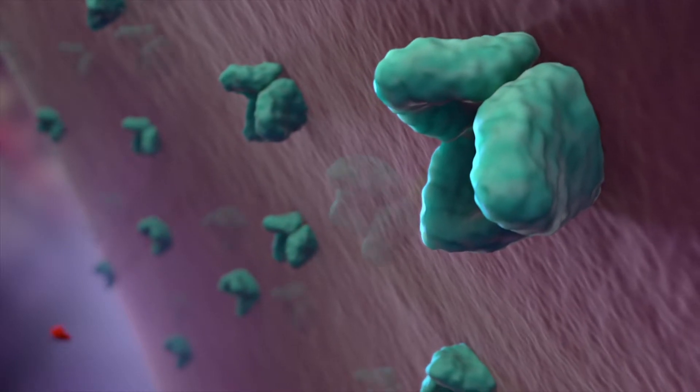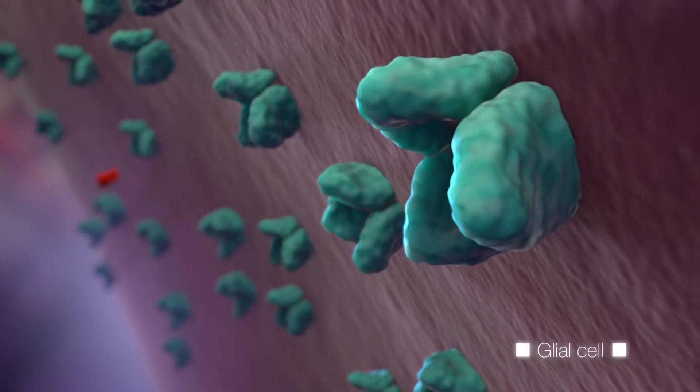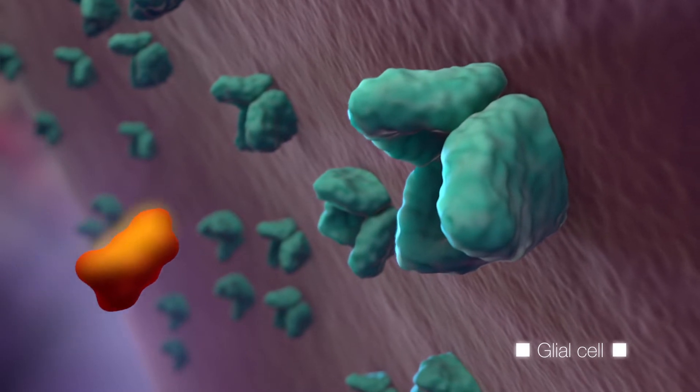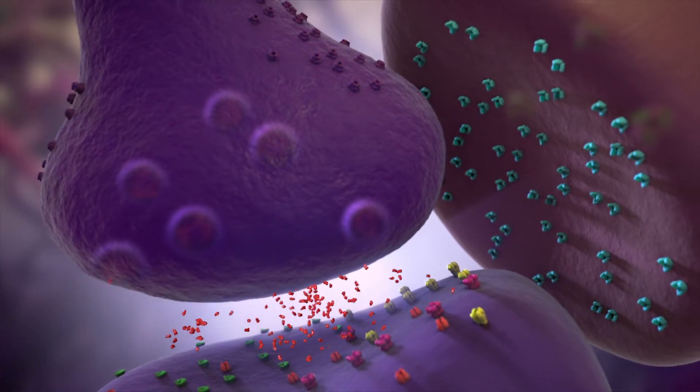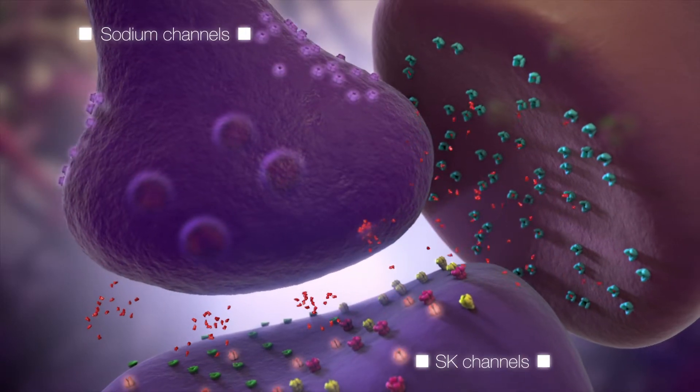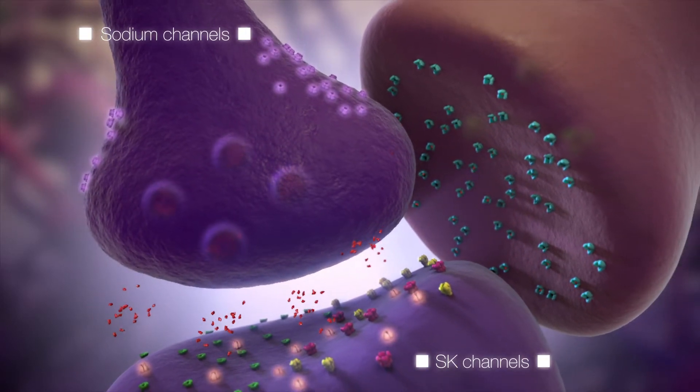Trigrilazole increases the expression and function of EAATs on glial cells, which facilitates the clearance of glutamate. Trigrilazole also affects glutamate signaling by modulating ion channels, which blocks presynaptic release of glutamate.